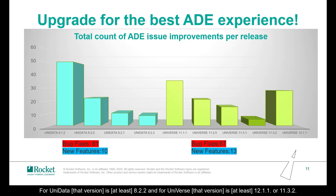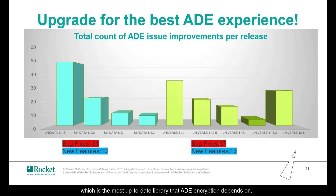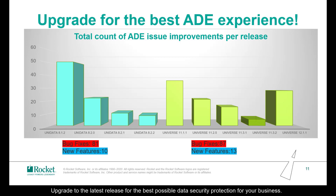For Unidata, the recommended version is 8.2.2. For Universe, it's 2.1.1 or 11.3.2. Unidata 8.2.2 and Universe 11.3.2 have also upgraded the OpenSSL library to version 1.1.1, which is the most up-to-date library that ADE encryption depends on. Don't risk your data security by enabling ADE on an older, less stable release. Upgrade to the latest release for the best possible data security protection for your business.